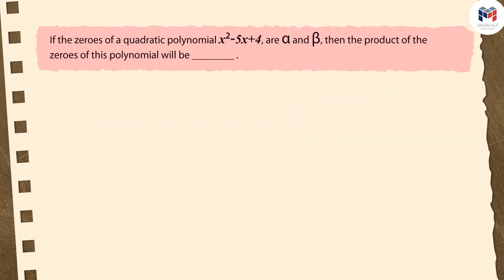Let us now see one more question. If the zeros of a quadratic polynomial x² - 5x + 4 are α and β, then what is the product of the zeros of this polynomial? The options are: 5, -5, -4, 4.